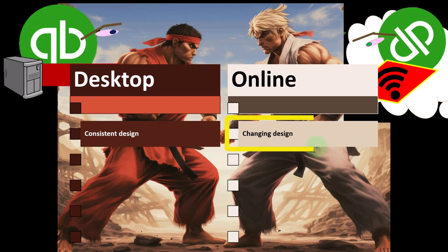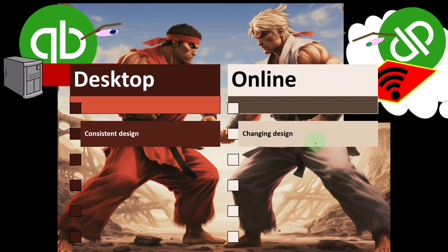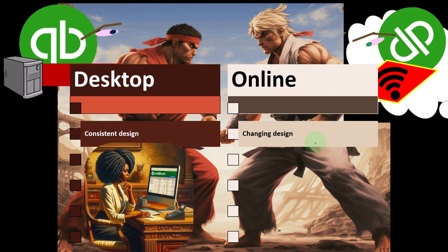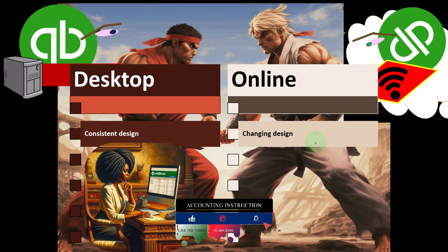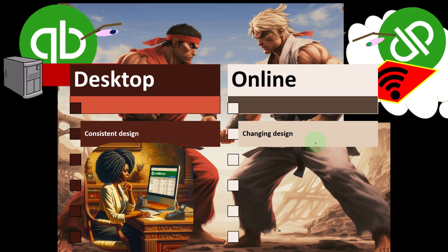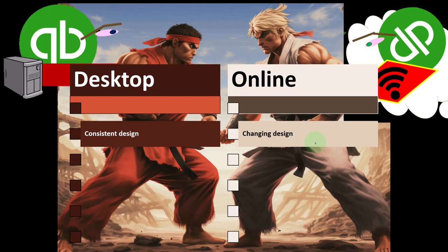Consistent design versus changing design: the desktop version has had a very consistent layout for a very long time. It looks like old Microsoft Office before the ribbon — just dropdowns. It works fine and doesn't change much over a long period of time. That consistency is what a lot of people like about it — if it's not broke, there's no need to fix it.